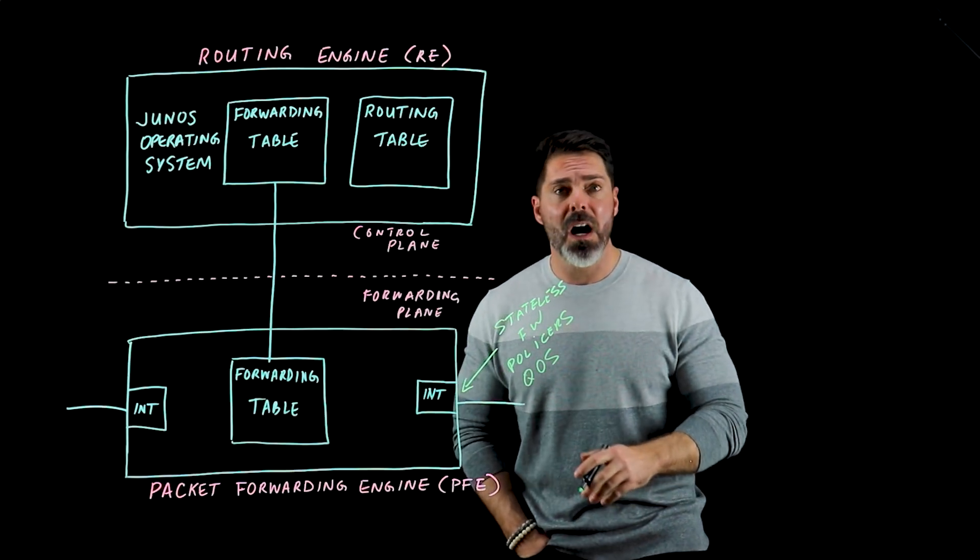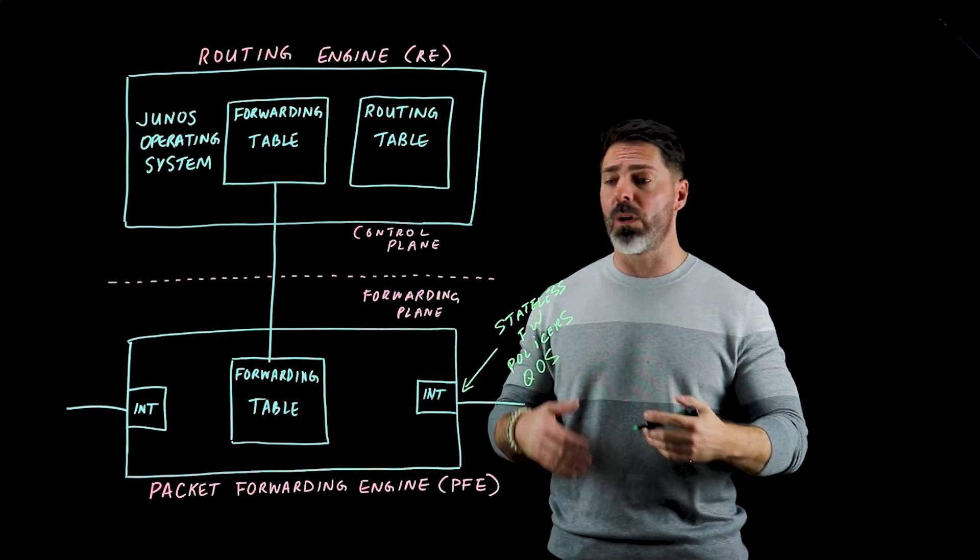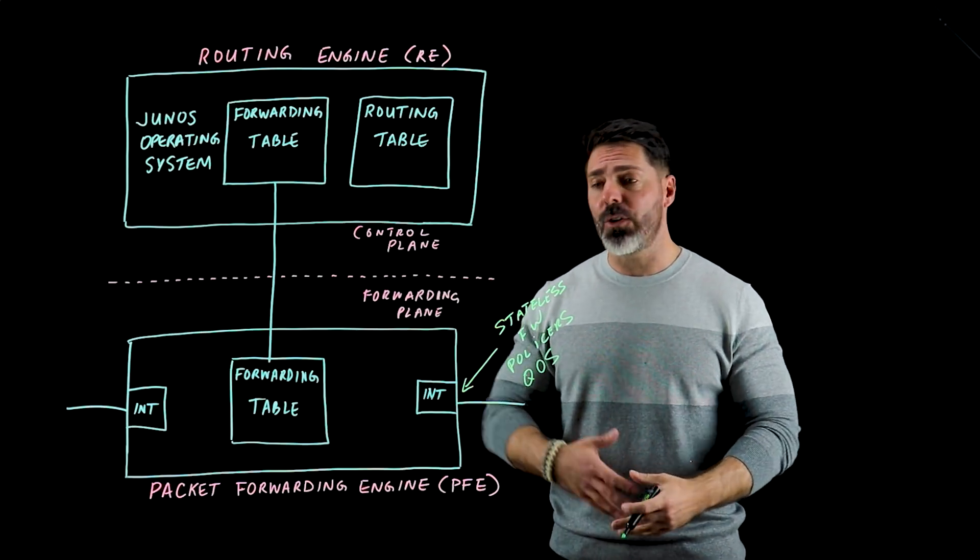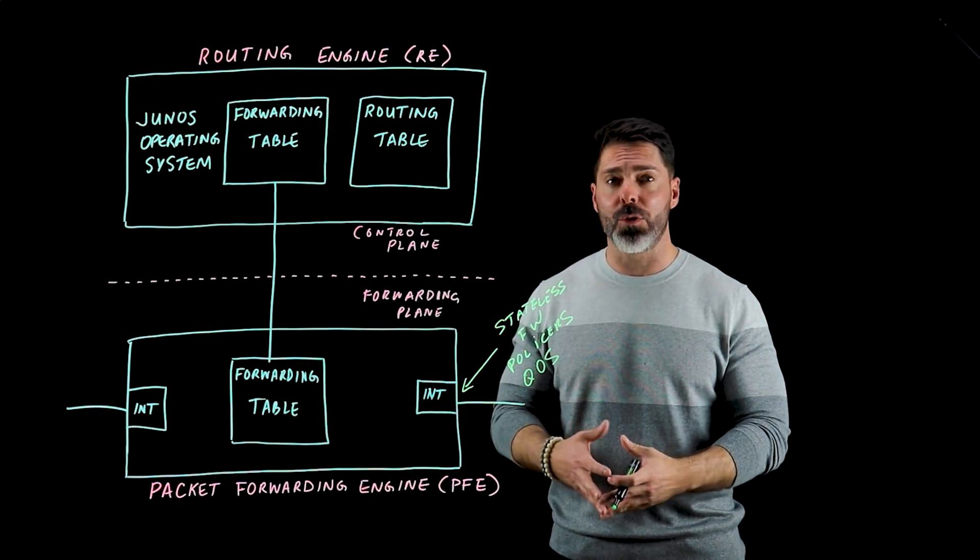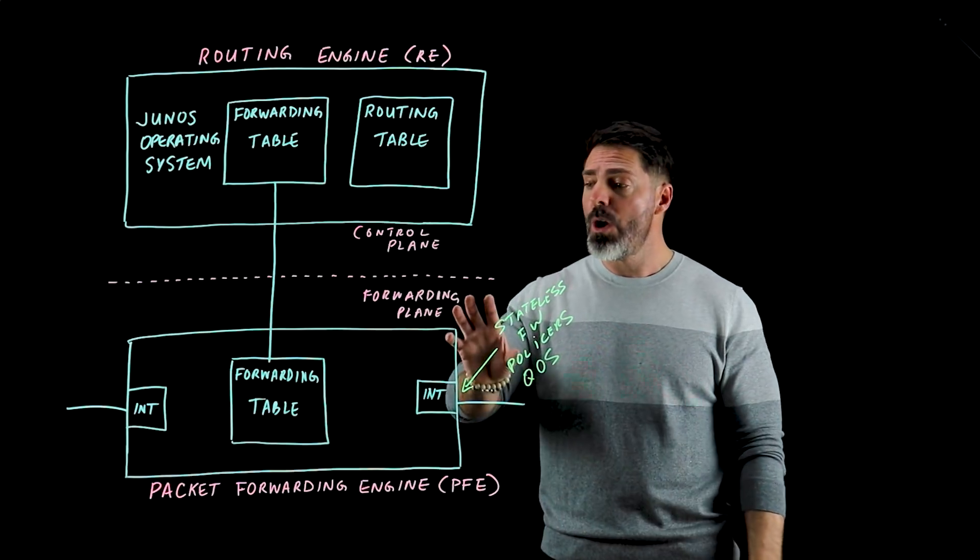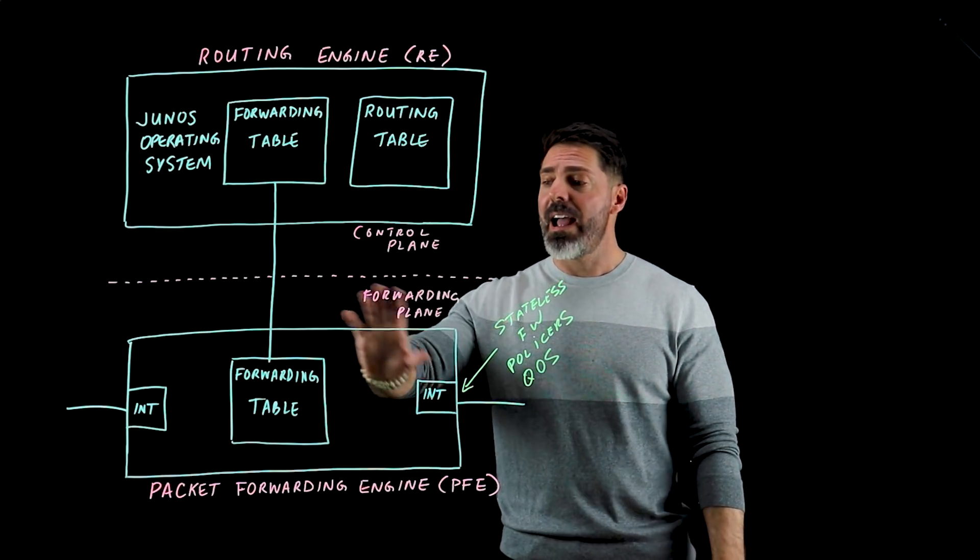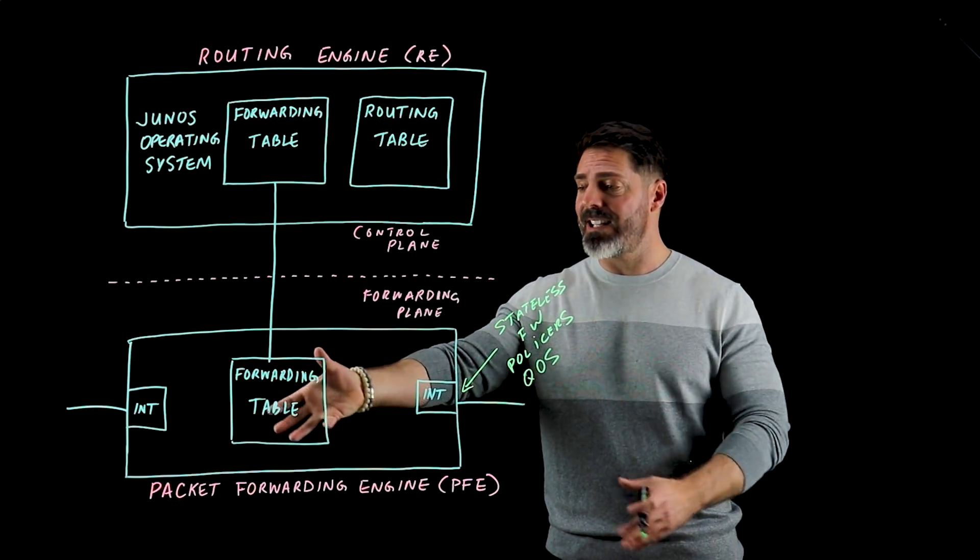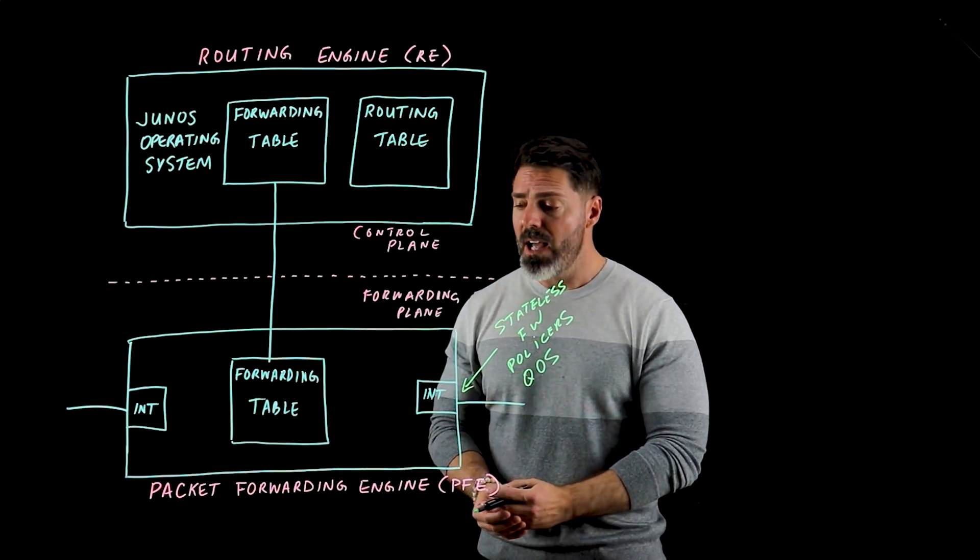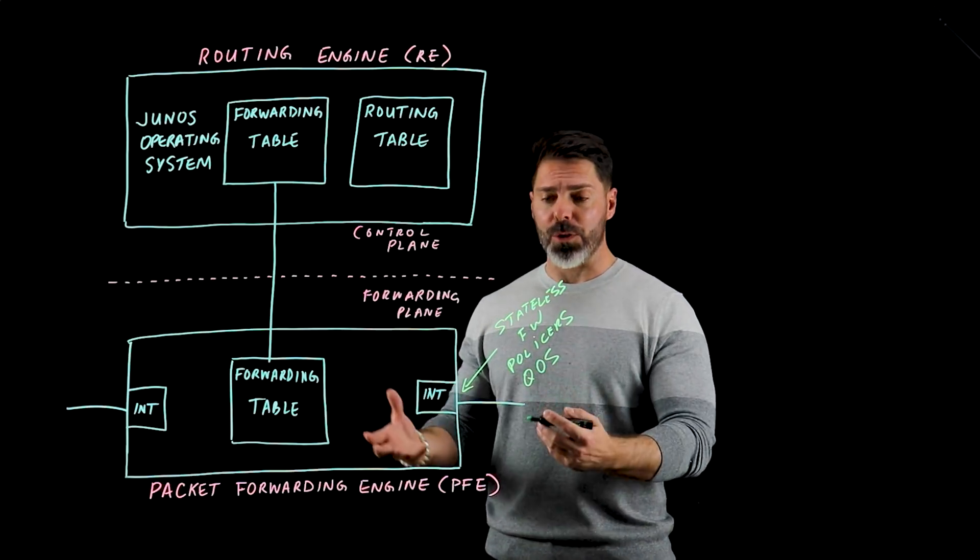So if we want to shape the traffic or rate limit the traffic or filter the traffic through some type of stateless firewall filter, those are all things that we apply on our interfaces and therefore they exist and happen in the packet forwarding engine of our router.